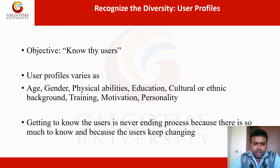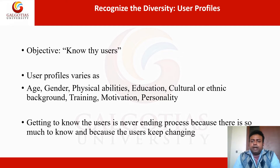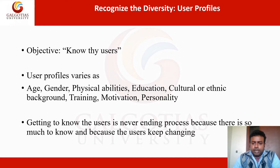The main objective of the user profile is to know the users. A user profile or user situation may vary due to age, gender, physical ability, education, cultural or ethnic background, training and motivation, and personality. Some people who are educated or come from different sociological cultures may have different kinds of needs. Getting to know the user is a never-ending process because there is so much to know and because users keep changing.